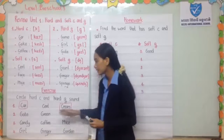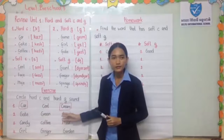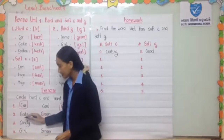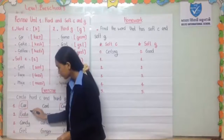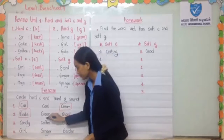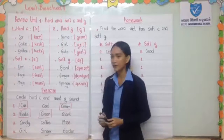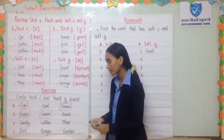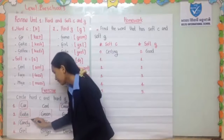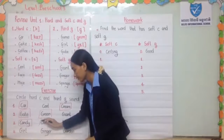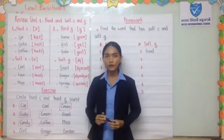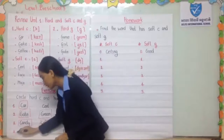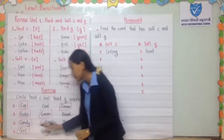For number two, the words are Gat, Quýnh, and Chai. We still call the word Gat. And the word Grim. For number three: Candy, Coffee, and Mice. We still call the words Candy and Coffee. For the last one: Girl, Ginger, and Garden. We still call two words — Girl and Garden.